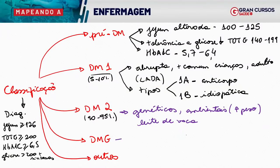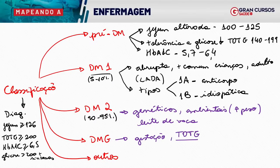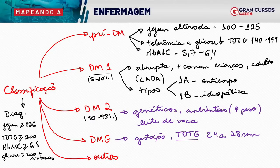O diabetes gestacional acontece na gestação. O teste que se faz é o teste oral de tolerância à glicose — não é glicemia pós-prandial, como uma prova do CESP chegou a dizer erroneamente. O teste é feito com 24 a 28 semanas de gestação. Os valores e resultados do teste gestacional serão abordados no mapa subsequente.